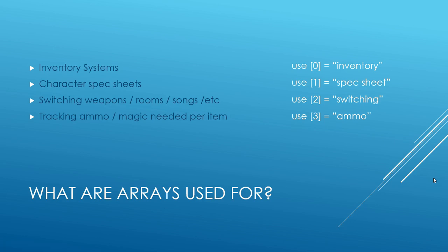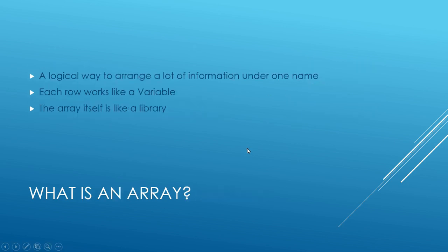Just like a variable, you could have a variable that says spell equals fireball, and you can just set it and forget it. Later on when you call on the word spell, it'll write the word fireball instead — that's how variables work. Or you could say ammo equals three zillion and it goes up and down as you go through the game. Either way, an array works like that. So if we were using a character spec sheet, car zero equals Tommy, car one is his class, his power equals 100. But instead of using an individual variable for each one, we put it all under one word.